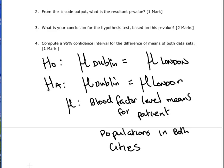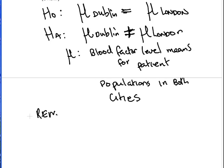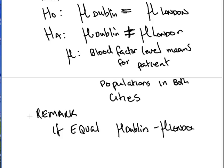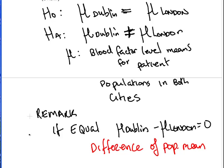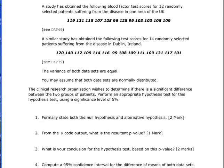The null hypothesis is: mu_Dublin equals mu_London. The alternative hypothesis is: mu_Dublin is not equal to mu_London, where mu represents the blood factor level means for patient populations in both cities. Under the equality assumption, the null can also be expressed as mu_Dublin minus mu_London equals zero.